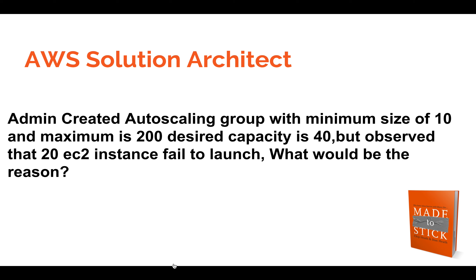To clarify the configuration: the auto scaling minimum size is 10 EC2 instances, the maximum is 200, and the desired capacity is 40. But auto scaling observed that 20 instances failed to launch. What would be the reason?